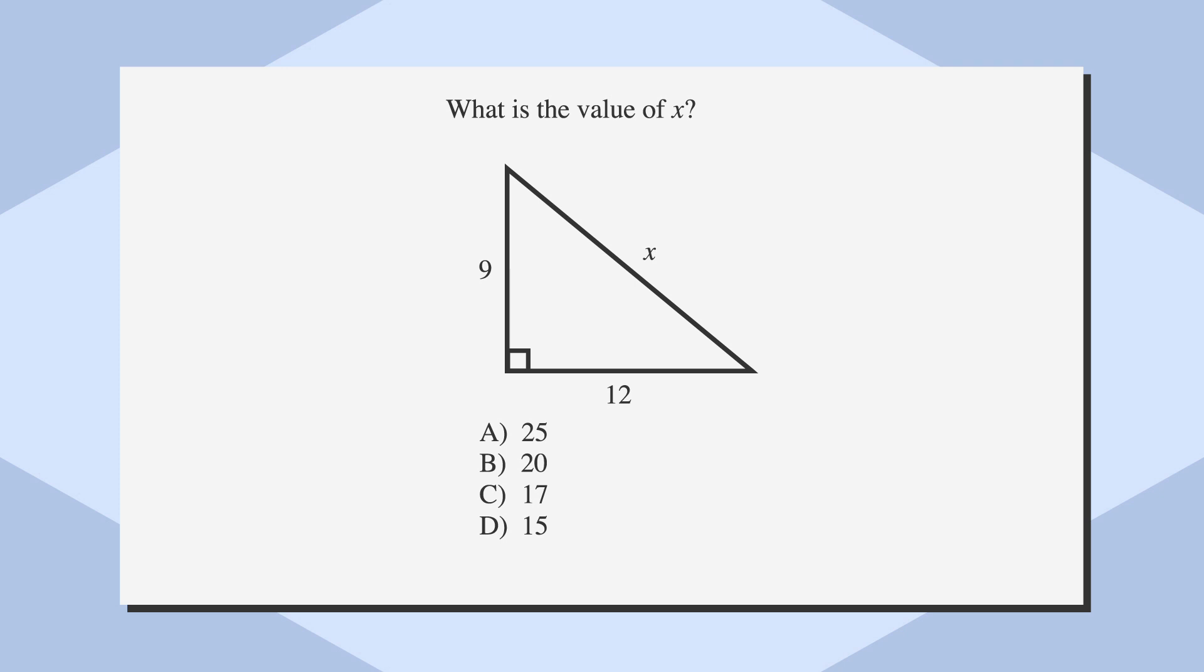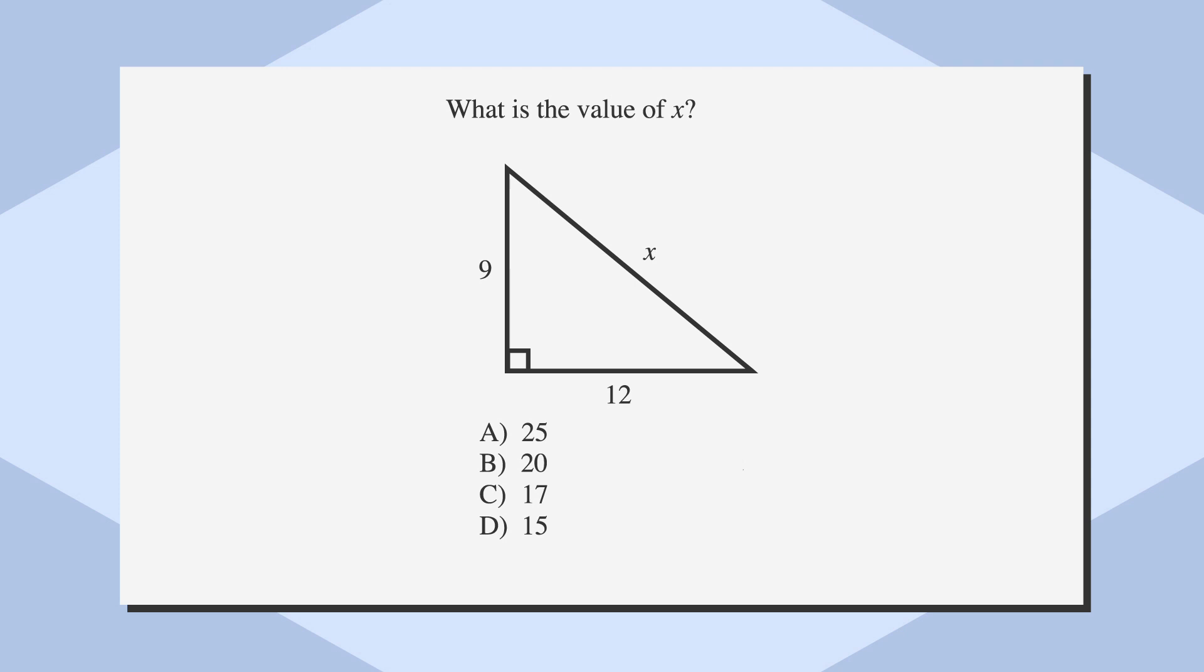What is the value of x? The answer choices here are A) 25, B) 20, C) 17, and D) 15. I know what you're thinking, and while we could solve this by using the Pythagorean theorem, we just said we're going to use the rules of 3-4-5 triangles to solve this question. So let's set up a ratio. Here's our triangle again.